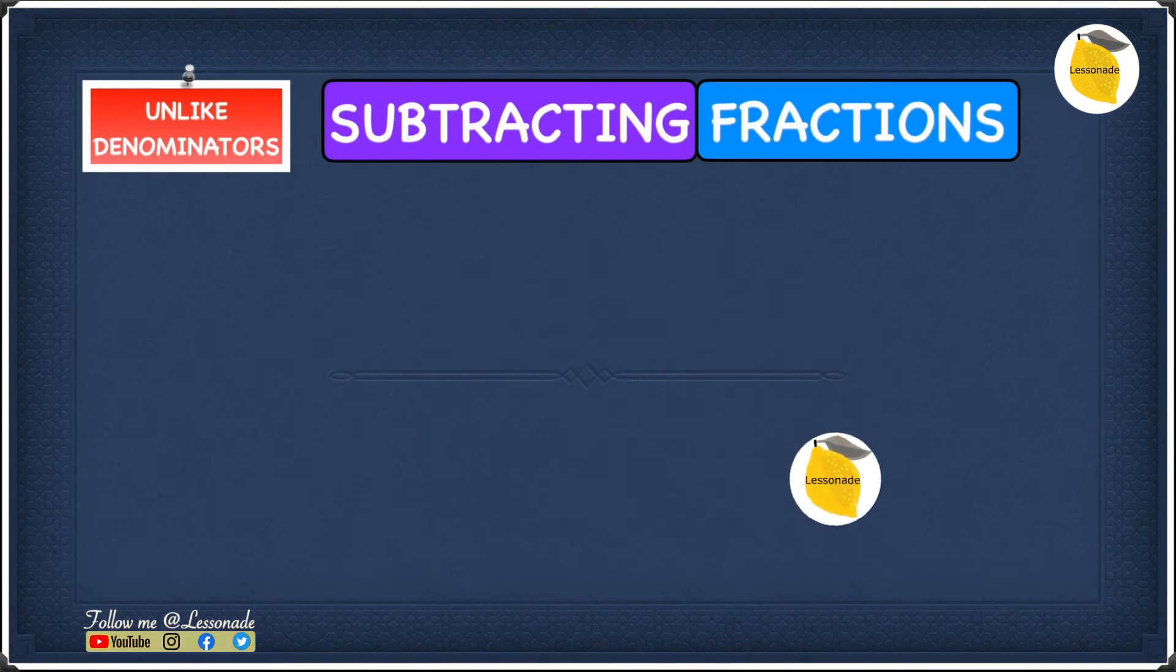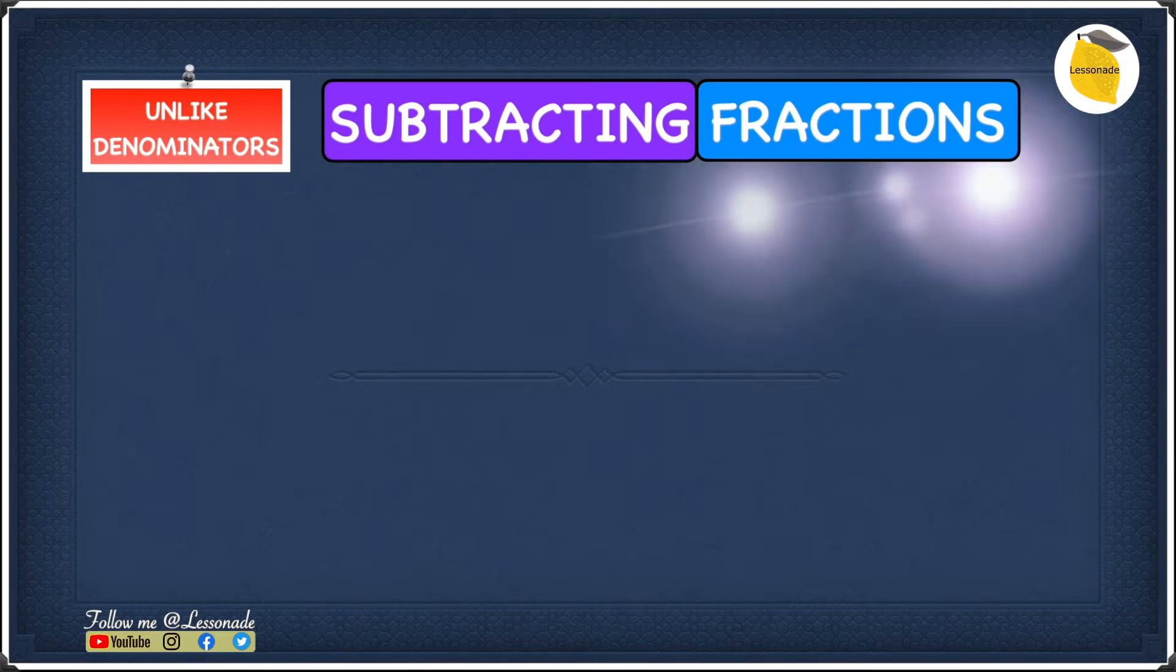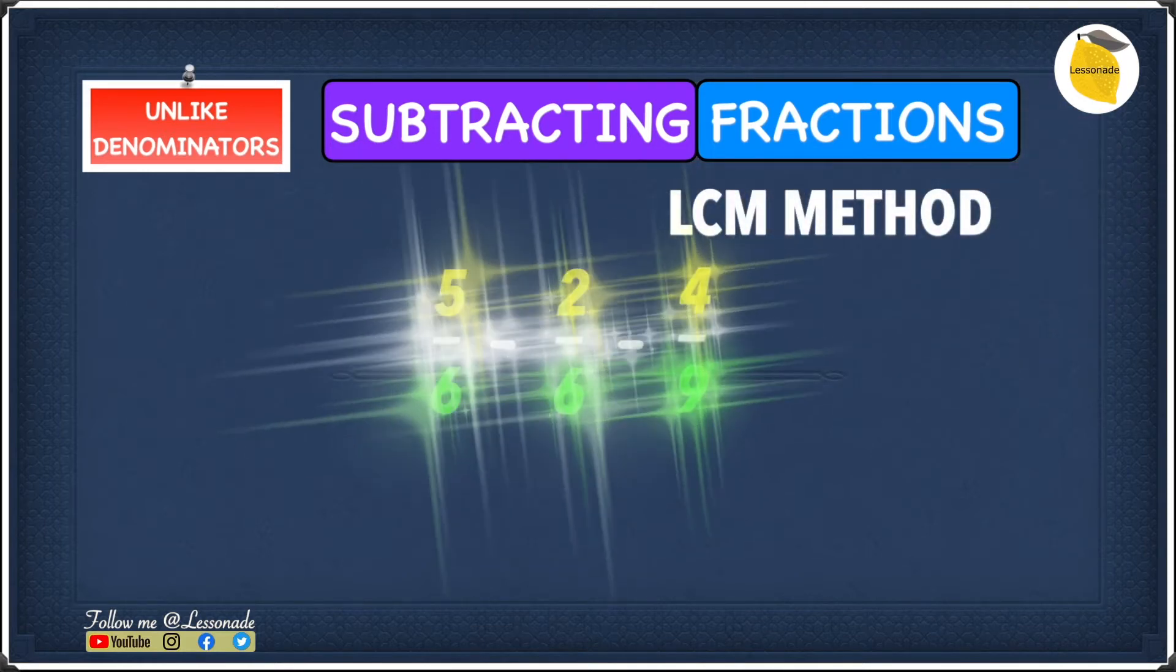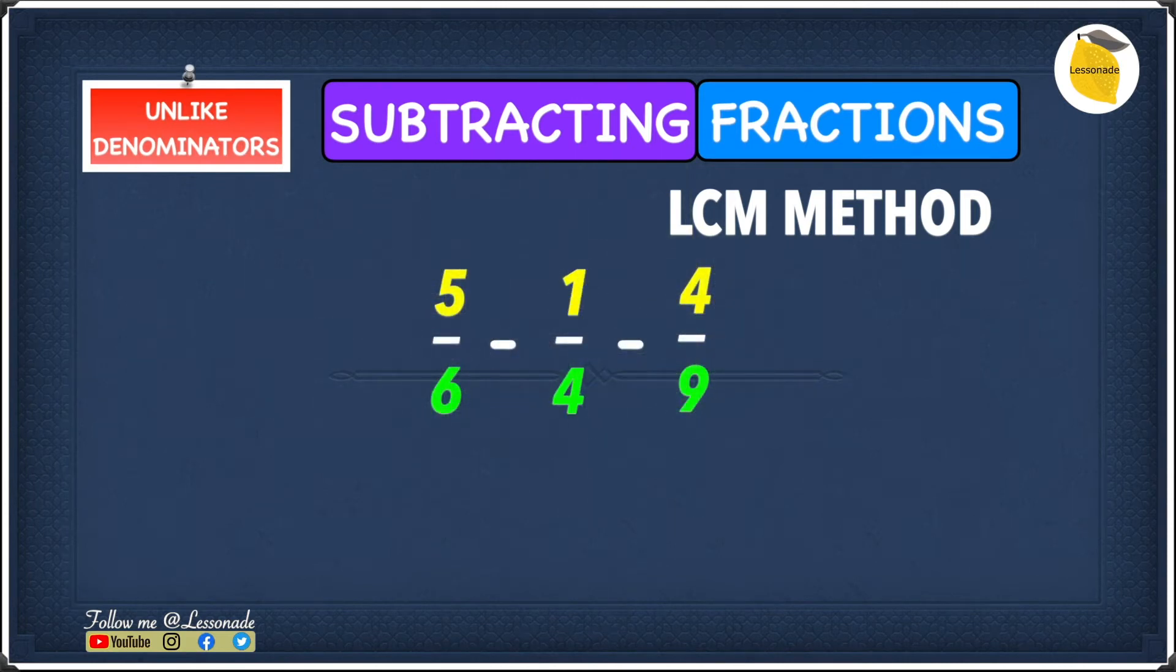Now let's have a look at subtracting fractions with unlike denominators using the LCM method. The example we have is 5 over 6 minus 1 over 4 minus 4 over 9.